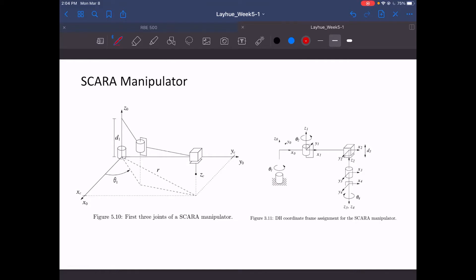So today we'll be working with the SCARA manipulator. I have two figures here. Figure 510 is primarily what we're worried about. It gives us a nice perspective for drawing our triangles as we will be doing inverse kinematics in a geometric sense.